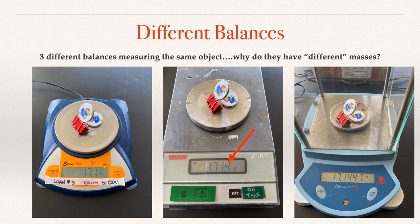If we kind of compare the middle and then the right balance, if we were going to round to the hundredths place, that second four would not round up. So we would be at 17.14, which is what we see in the middle balance. So our balances are showing a different degree of accuracy in their measurements.